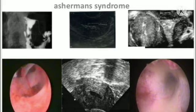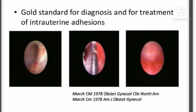These adhesions are fibromuscular connective tissue. They affect the endometrium, myometrium, and can lead to hypogonadism.